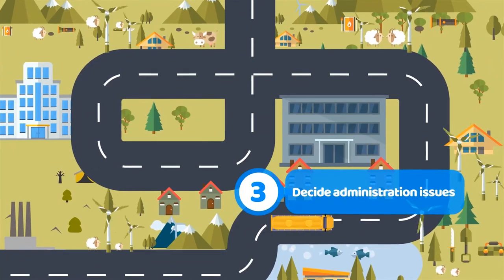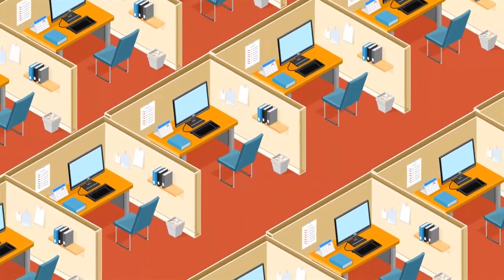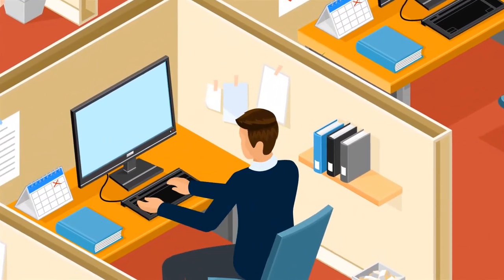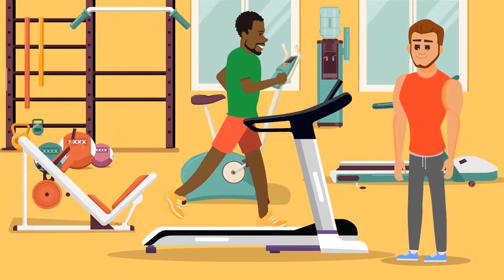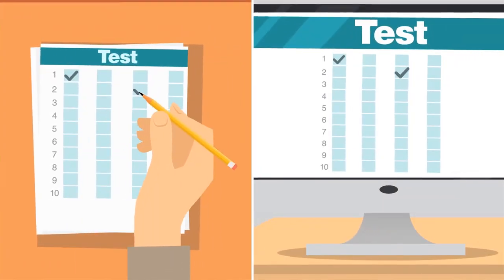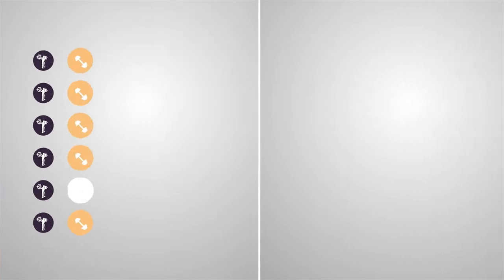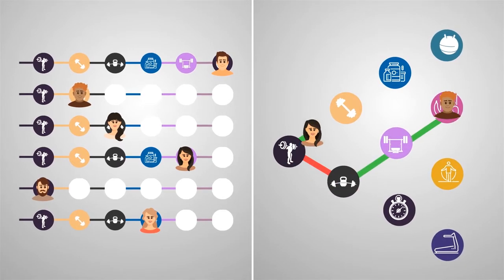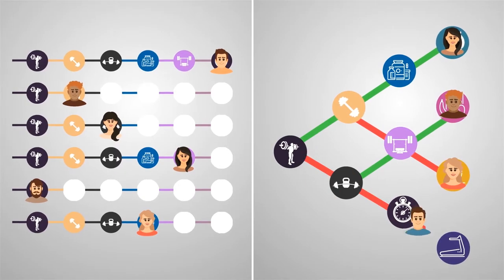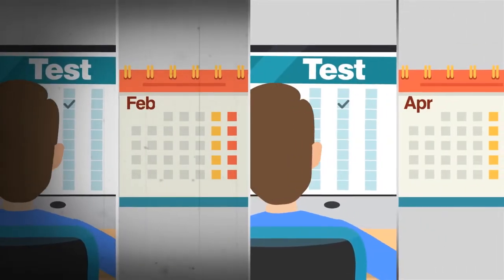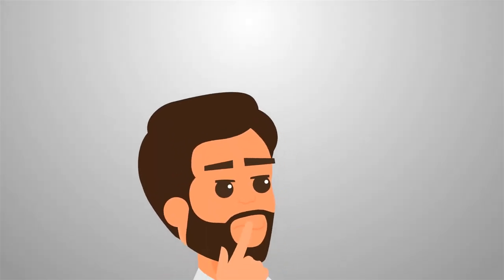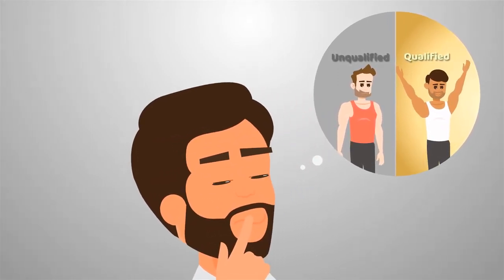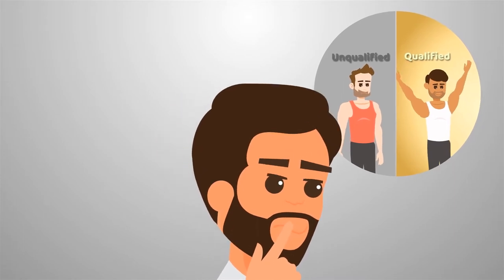Step 3: Decide administration issues. Aaron needs to figure out when and where the test can be taken, as well as how long the test will take. For example, will candidates go to a test-taking centre, or will they take the test in their own gym with a qualified person administering it? Will the test be on paper or computer? Will all test takers see the same items, or will the test adapt to each person? Will candidates be allowed to retake the test if they do not like their first score? Aaron needs to make many decisions about how to administer the test fairly.